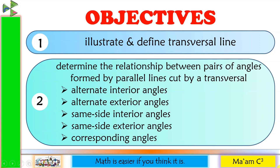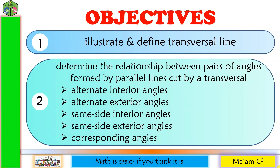Our objectives in this lesson are the following: illustrate and define transversal line, and determine the relationship between pairs of angles formed by parallel lines cut by a transversal. These are alternate interior angles, alternate exterior angles, same-side interior angles, same-side exterior angles, and corresponding angles.